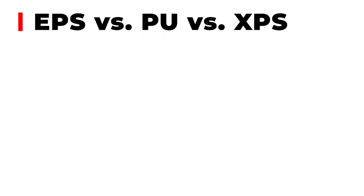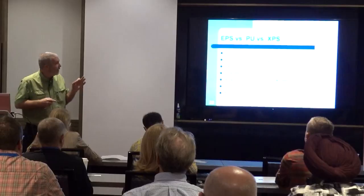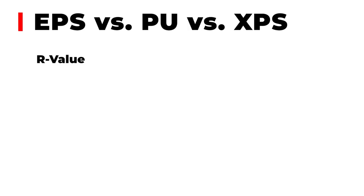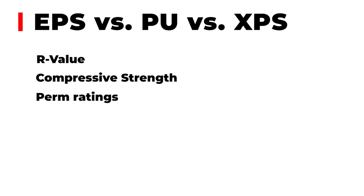EPS, polyurethane, and XPS all have subtle differences and slightly different R-values. Some of the R-value language is frankly just marketing. They're all closed cell and perform basically the same way. They all have similar compressive strengths — polyurethane is slightly higher, XPS is in the middle, and EPS is a little bit lower. They have different perm ratings, but when considering the panel in totality, all act as a semi-permeable vapor barrier.